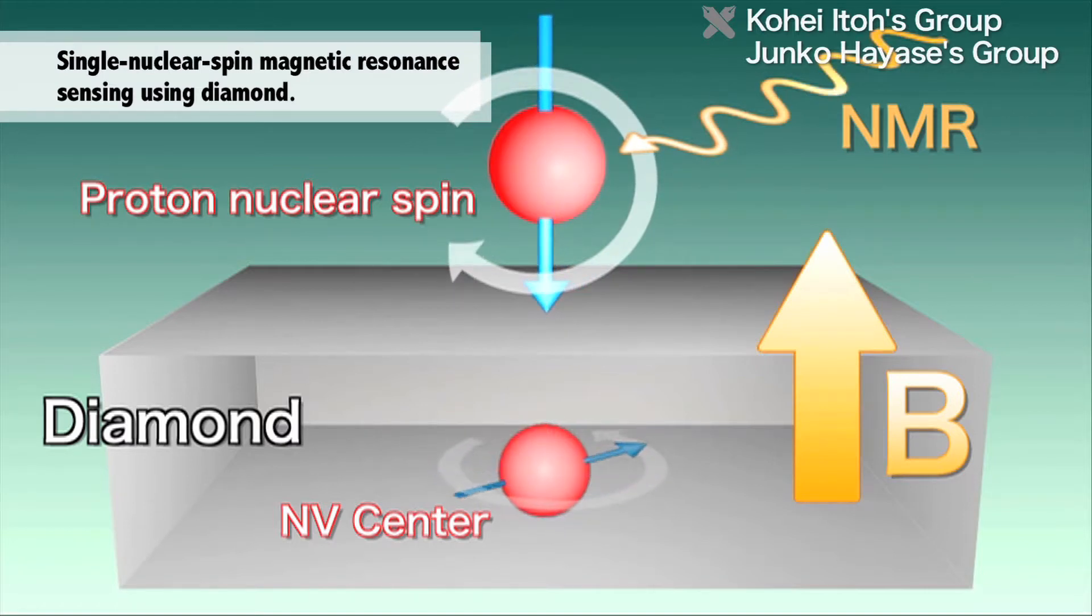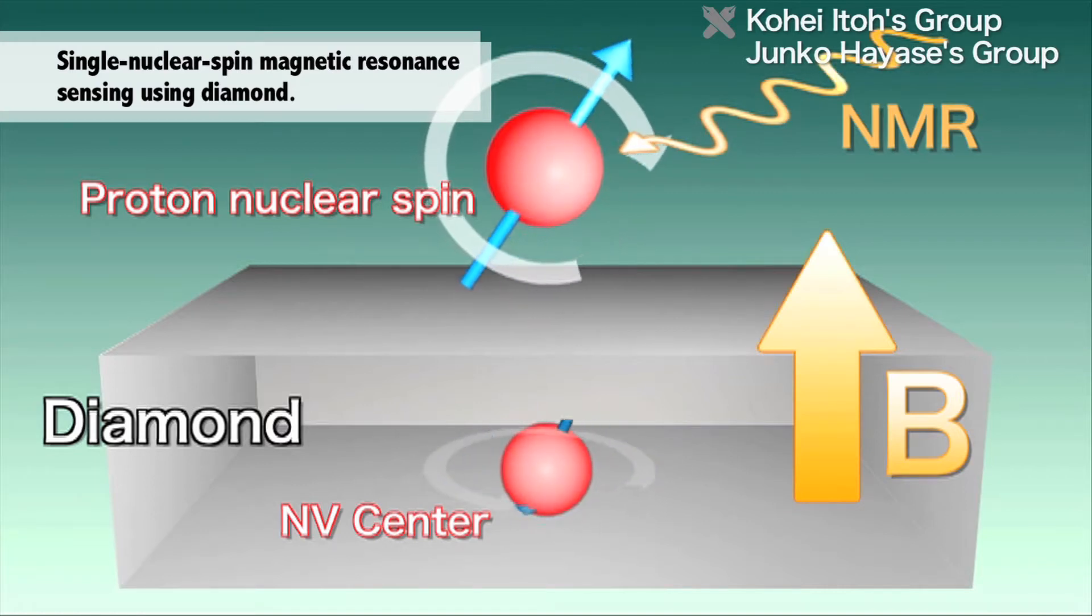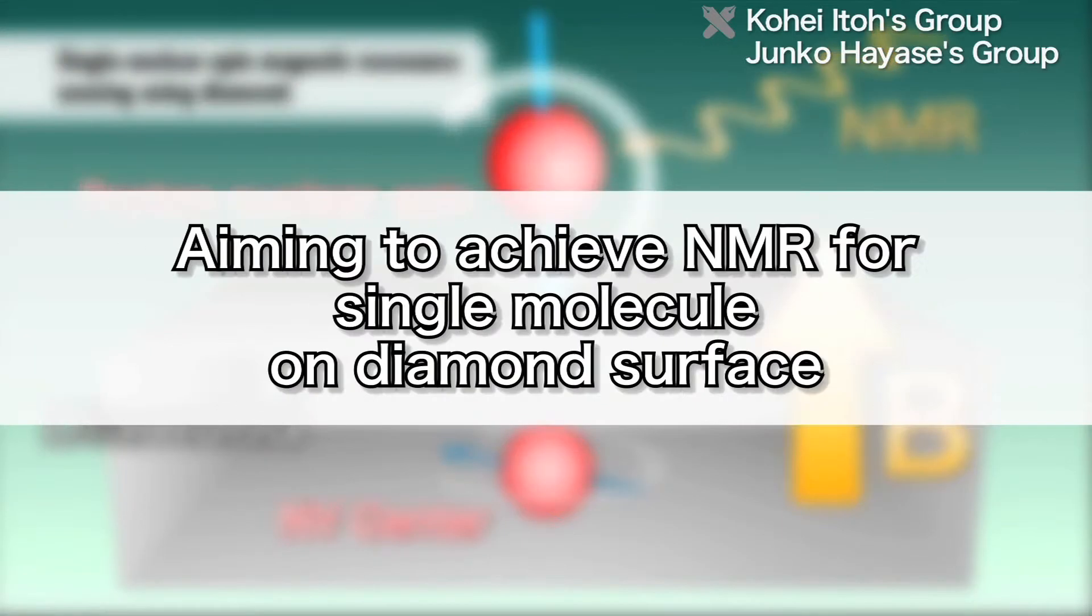By measuring that direction using the electron spin in the NV center, the Ito lab aims to achieve NMR detection of single proton nuclear spin. By developing this technology further, NMR of a single molecule may be realized.